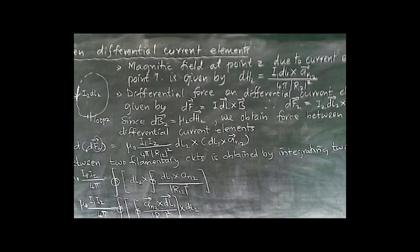So we obtain the force between two differential current elements: dF2 = μ₀ i1 i2 divided by 4π into r12 squared, with dl2 cross (dl1 cross a_r12). To get the total force between two filamentary circuits, we integrate twice — since we have d squared, we integrate to eliminate it. Therefore, F = (μ₀ i1 i2) / 4π times the closed line integral over dl2 cross the integral of dl1 cross a_r12 divided by r12 squared.